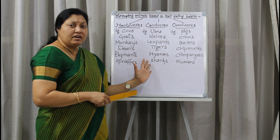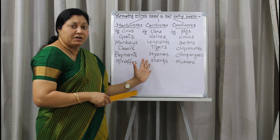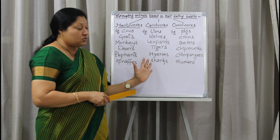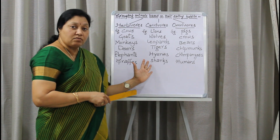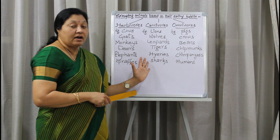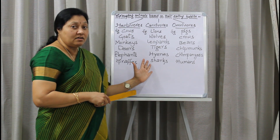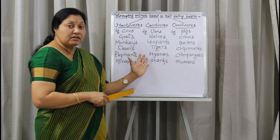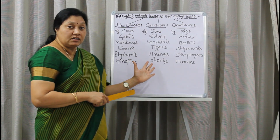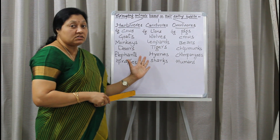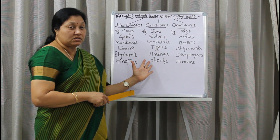A dead organism spreads disease very quickly. So these scavengers eat the dead meat and maintain a healthy habitat. Hyenas and eagles come under scavengers.